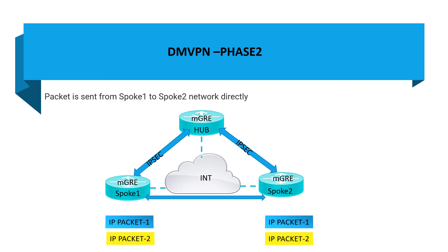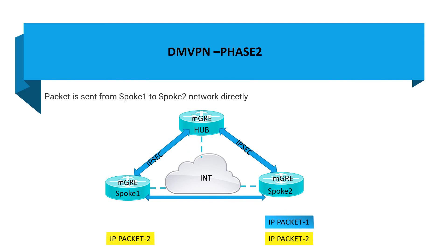In Phase 2, Cisco tried to build spoke-to-spoke connections directly. However, there were some limitations. Looking at the animation: the first packet still reaches the hub similar to Phase 1 and then goes back to Spoke 2, however the next packet can reach directly from Spoke 1 to Spoke 2.